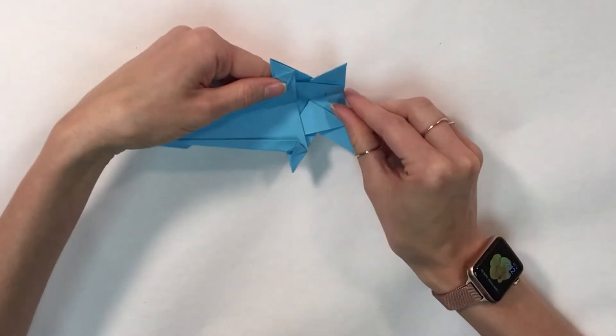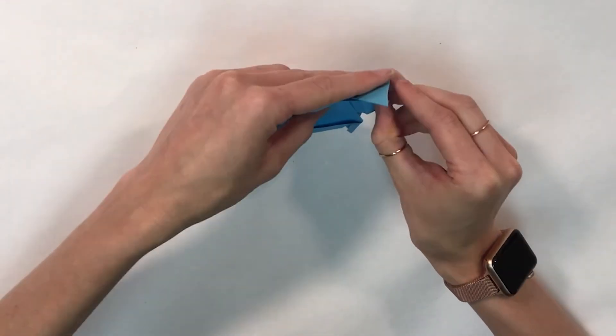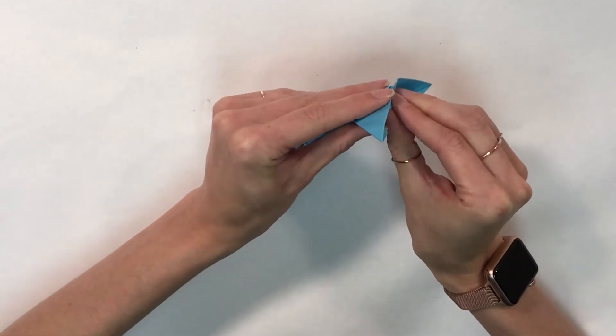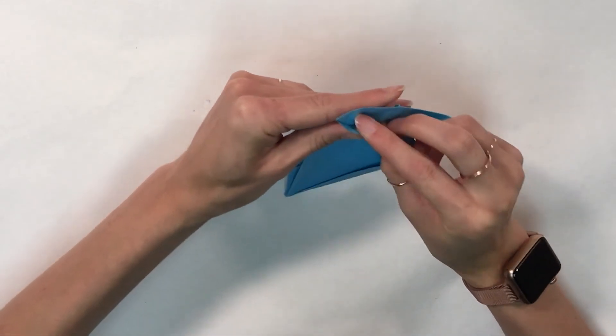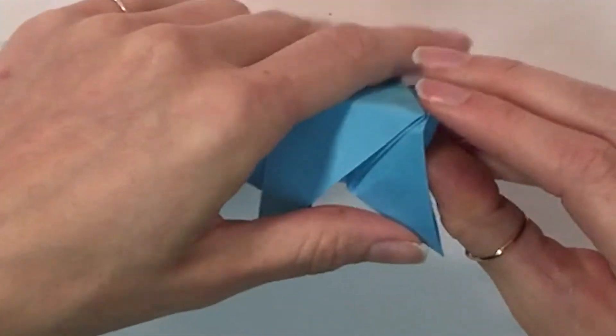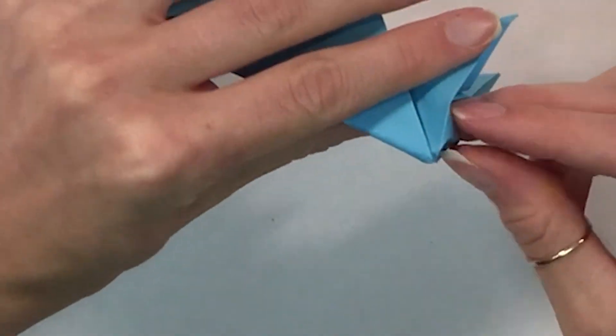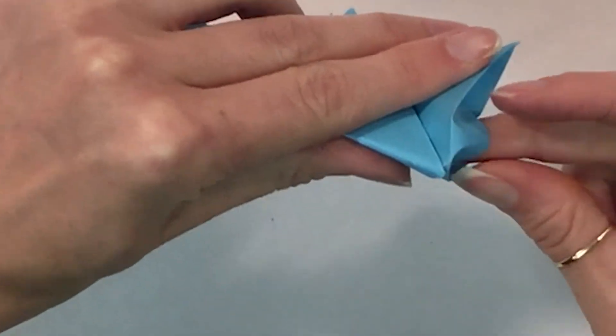And this first fold line that we made, I'm going to pull the paper out just a little bit. I don't want it to untuck. I just want to pull it forward a little bit as I refold my llama.